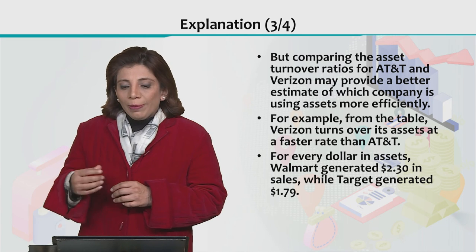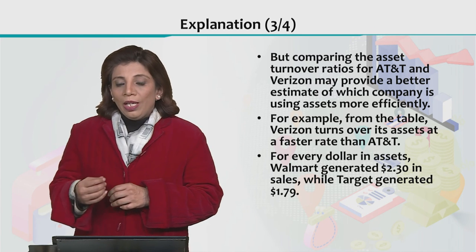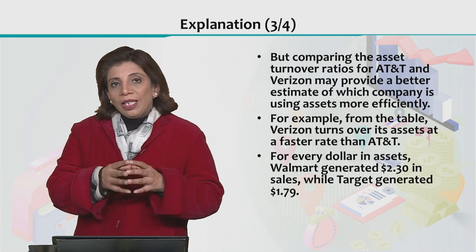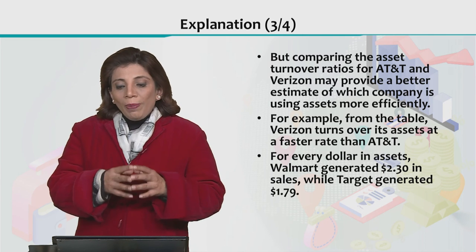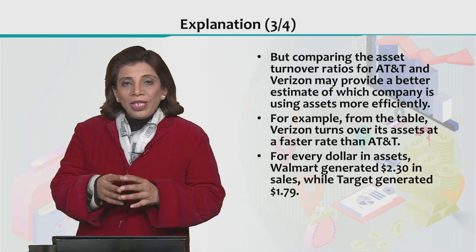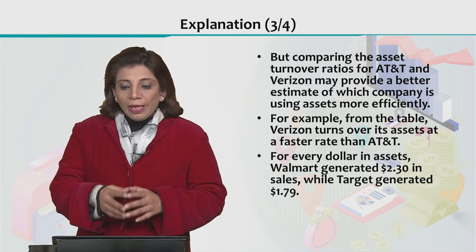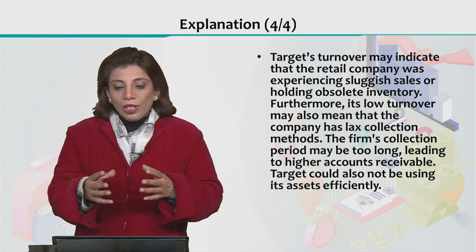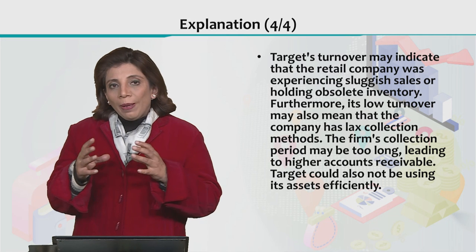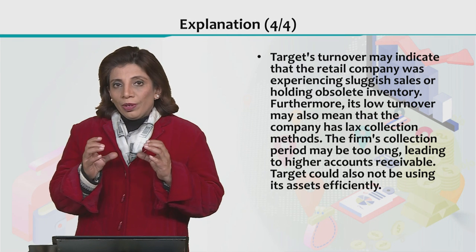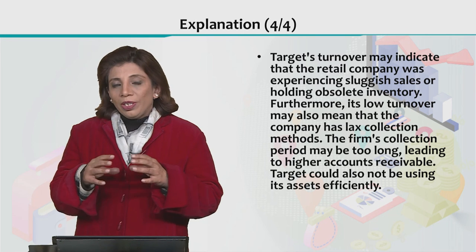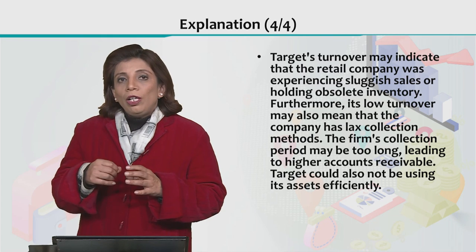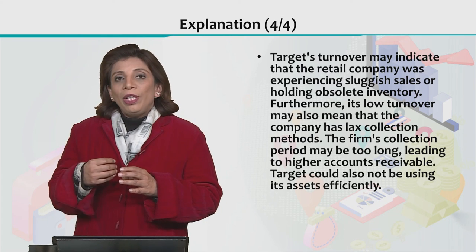Among all four companies, the best asset turnover ratio is Walmart's 2.30. This means that for every 1 dollar of total assets, Walmart has earned 2.30 dollars in revenue, showing how efficiently they run their business. By comparison, Target generated 1.79 dollars per dollar of assets. This is how you can compare companies overall, especially when they operate in the same sector or industry, on the basis of asset turnover ratio — it tells you how efficiently these companies are being operated.